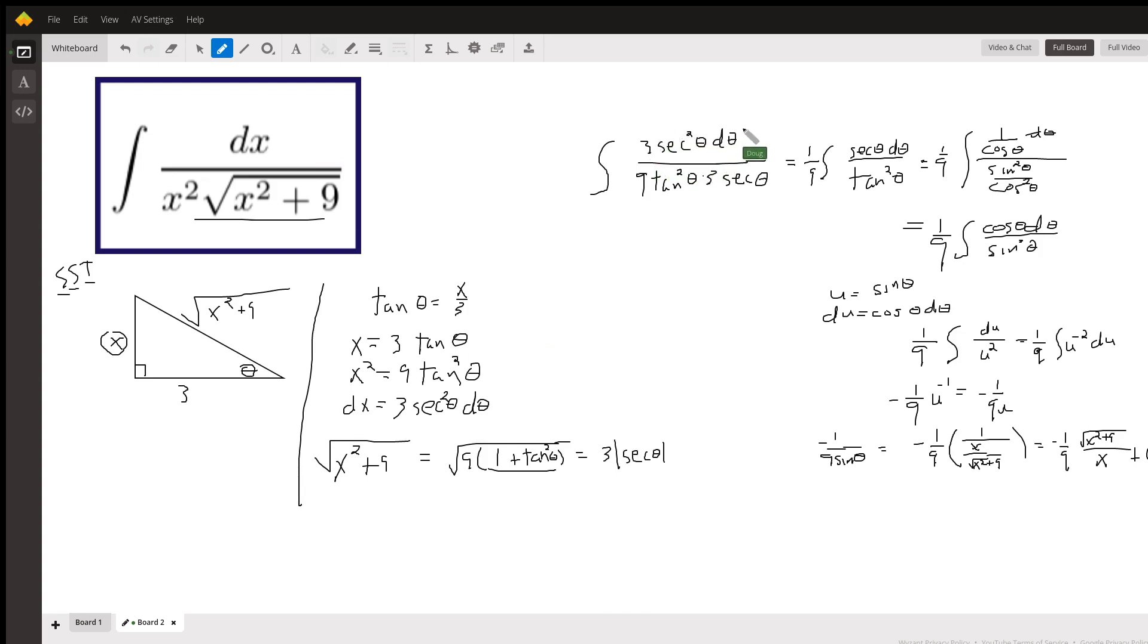There's the DX right here. Here is X squared. And here is, this is supposed to be a 3. Secant theta, I left off the absolute value. The 3's cancel. One of the secants cancels.